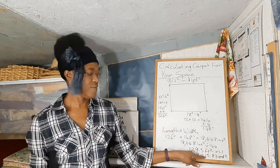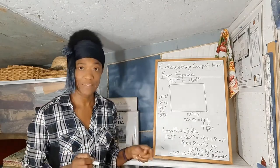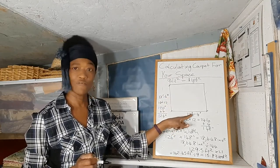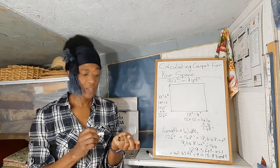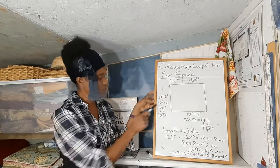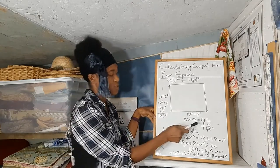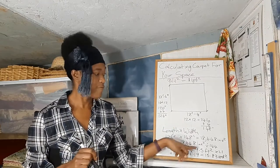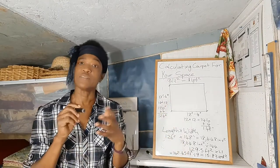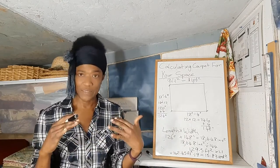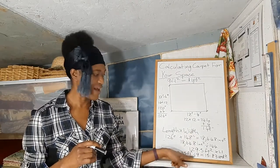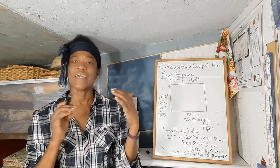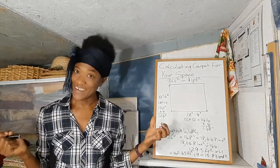So you will need 15.83 square yards of carpet to cover a space that is 10 feet 6 inches by 12 feet 4 inches. When you're in this situation, convert everything to inches, multiply length times width, then divide by 144 to get square feet. Then multiply by 1.1 to accommodate wastage, and divide by 9 because there are 9 square feet in a square yard.